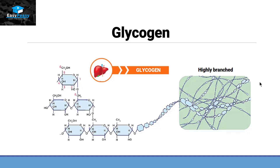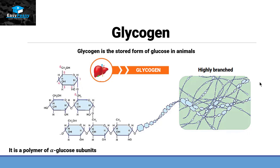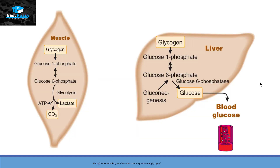Glycogen is the stored form of glucose in animals. It is highly branched and also made up of alpha glucose subunits. The difference between glycogen and starch is that branching occurs after every 10 subunits instead of 20. Glycogen is usually present in muscle cells and liver cells. In muscle cells it can directly convert to ADP for energy, while liver glycogen controls blood glucose concentration — converting to glucose when blood glucose levels drop.